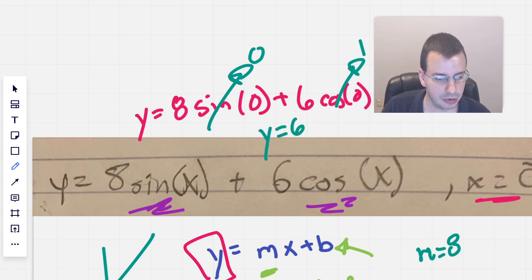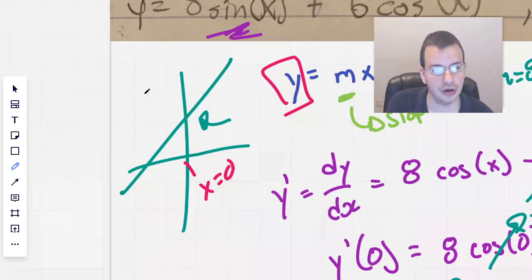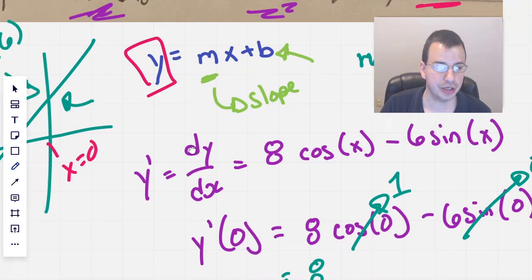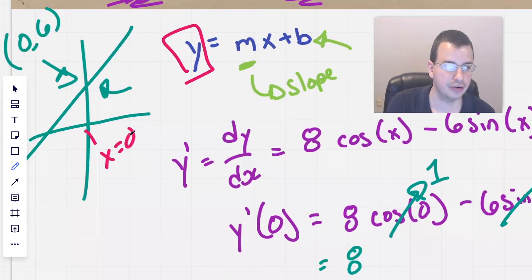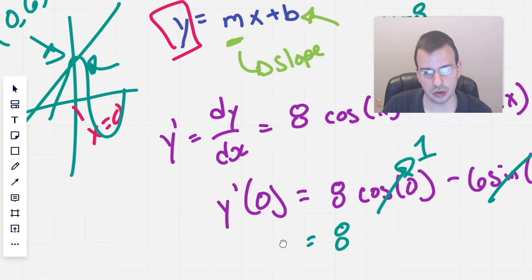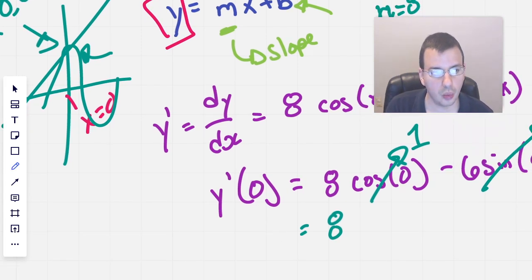So now we go down to this point over here. And we know that this point right here is going to be zero, six. Okay. So now we know that that point is going to be in common with both our curve. I'm going to say it looks like this. And our tangent line. So we can take our tangent line, come down here.